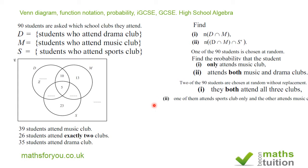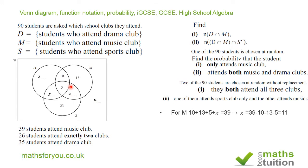We shall now attempt to fill in the gaps. I'm giving them the names Z, Y, X, and N. For X first: we look at the information about the music club. We know that 39 students attend music club, so 10 plus 13 plus 5 plus X equals 39. That gives X a value of 11.